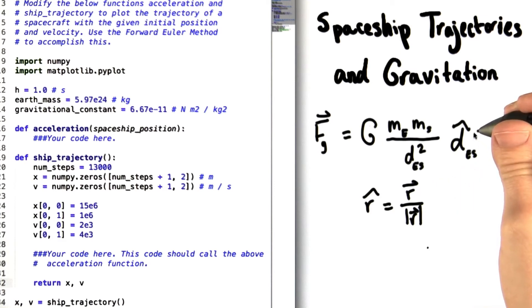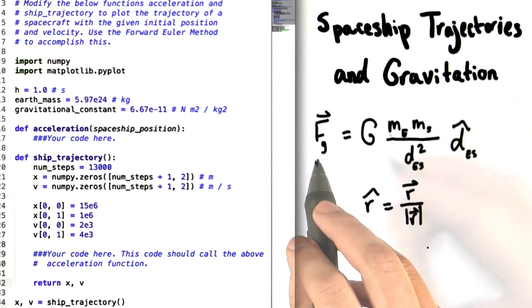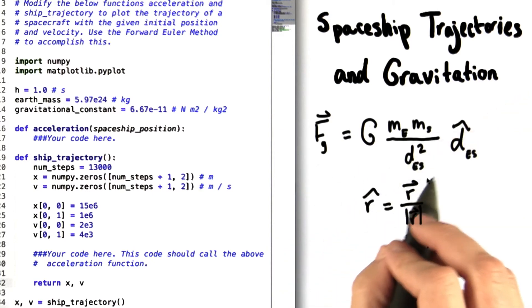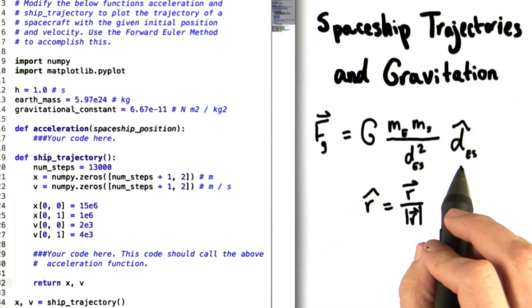So this d-hat up here shows us that the gravitational force has this magnitude and is pointing in this direction, which is a line pointing from the Earth out to the spaceship.